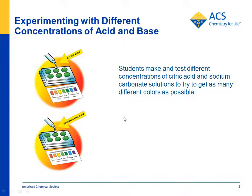The way they do this is by using a set amount of water and a flat toothpick to pick up some citric acid, putting that in the water, then adding another toothpick amount to make it more concentrated. They try to see how many different colors they can get — this is an introduction to get them used to the pH scale and what the universal indicator color chart shows.